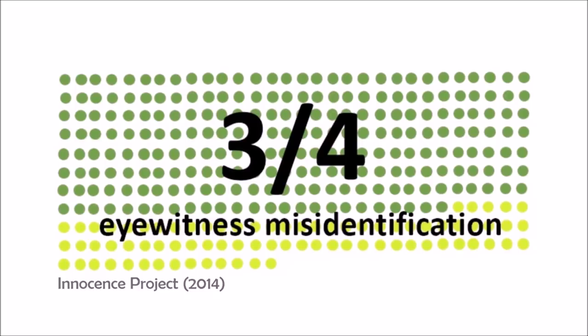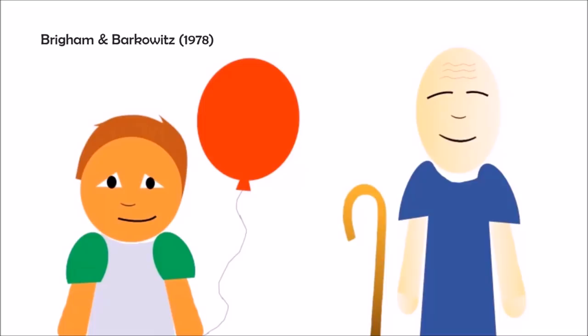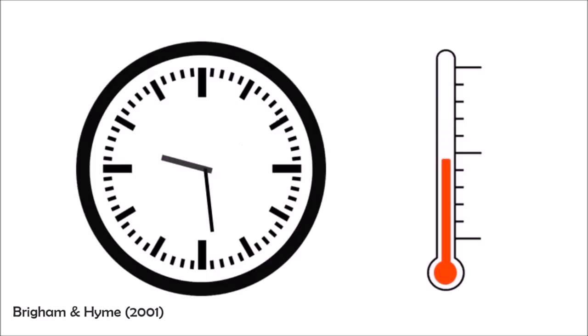Although no one is immune to the misinformation effect, young children and the elderly are the most prone to it. In addition, the effects are strongest after a long period of time, when the memory trace becomes so weak that we rely almost entirely on external information to reconstruct the memory.